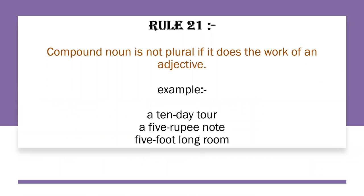Rule number 21: A compound noun is not made plural if it is working as an adjective. For example, 'ten-day' used as an adjective — it will not become plural. We say 'a ten-day tour', not 'ten-days tour', even though 10 is plural in concept. Similarly, '5-foot-long room', not '5-feet-long room.'